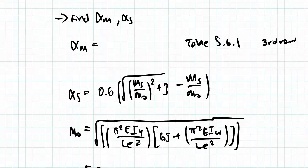So now to find our member capacity in bending, to look at flexural torsion buckling and lateral buckling, we have to find alpha m and alpha s.